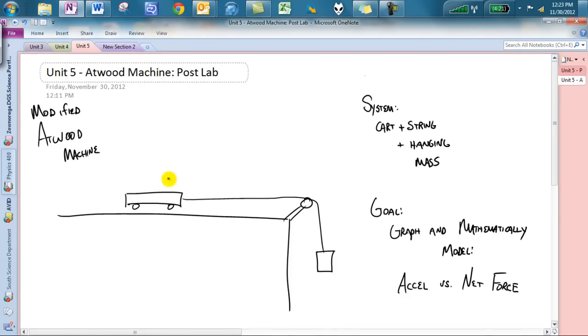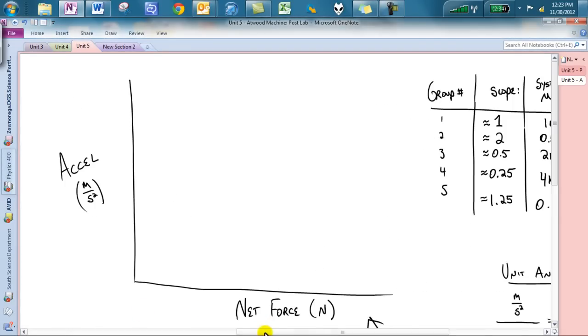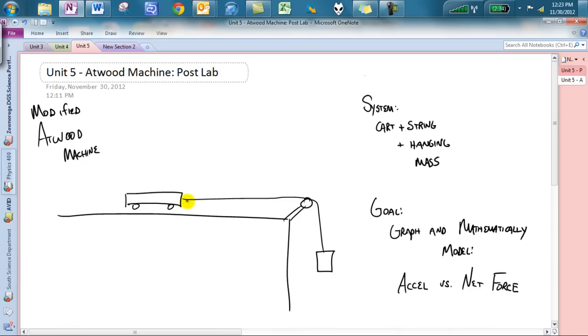We know the cart is accelerating across there because when you draw the force diagram, hey, I didn't say move yet. When you draw the force diagram it moves on over and our biggest thing is the system that we are looking at for this situation is the cart, the string and the hanging mass.